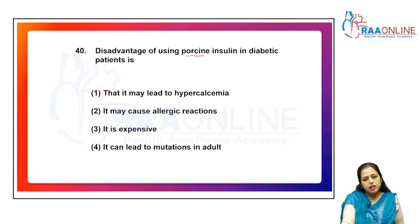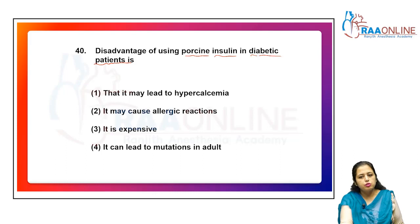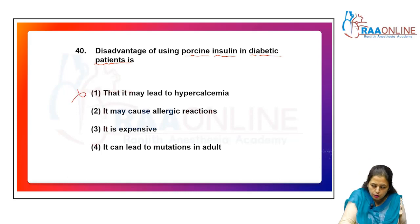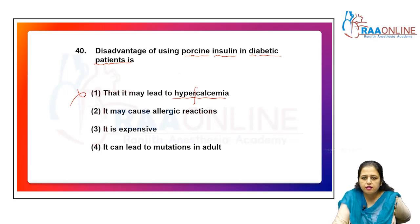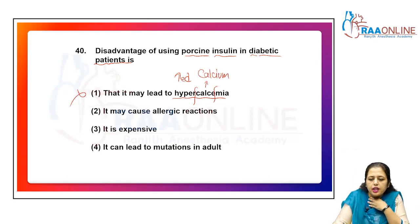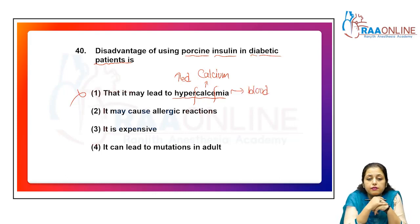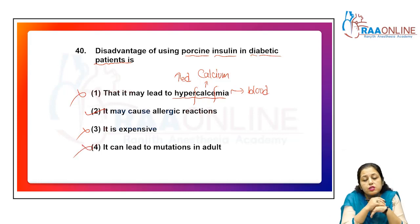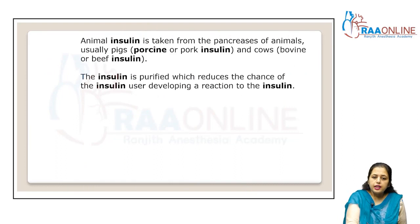The disadvantage of porcine insulin in diabetic patients is that it may cause an allergic reaction. Porcine insulin is extracted from the pancreas of slaughtered pigs (called pork insulin). It does not lead to hypercalcemia (increased calcium in blood), is not excessively expensive, and does not lead to mutations in adults. The correct answer is option 2 — it may cause an allergic reaction.